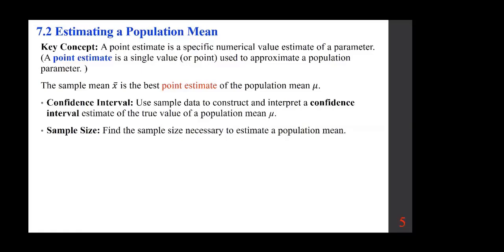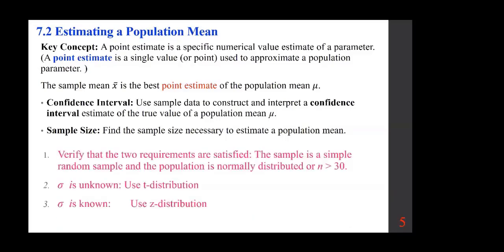We make up a confidence interval based on a sample to get the confidence interval estimate of the true value of the population mean. We can also find the sample size necessary to estimate the population mean. First, verify that the two requirements are satisfied: the sample is a simple random sample, and the population is normally distributed or n is greater than 30. If sigma is unknown, use the t-distribution. If sigma is known, use the z-distribution.